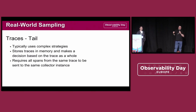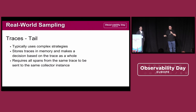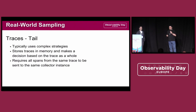One characteristic of tail sampling is that we have to keep data in memory for some time — we keep all data in memory for a specific amount of time, and once we deem a trace to be ready, we make a decision based on how the trace looks.